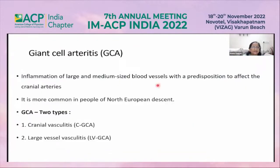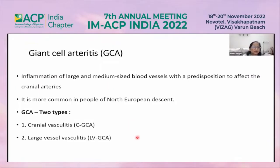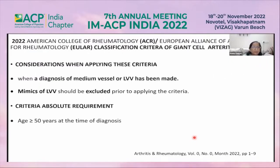Giant cell arteritis is inflammation of medium-sized and large-sized vessels with predisposition to affect the cranial arteries. It is more common in people of North European descent. GCA is of two types: cranial vasculitis and large vessel vasculitis.